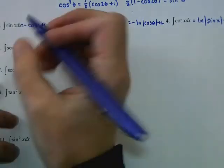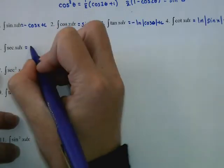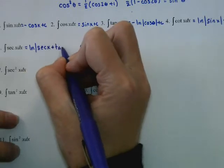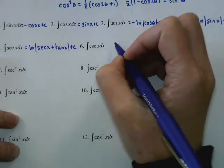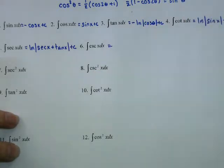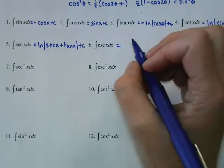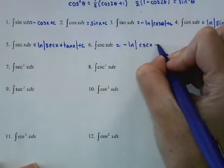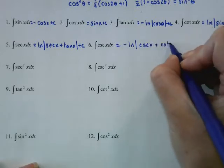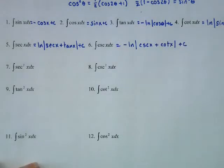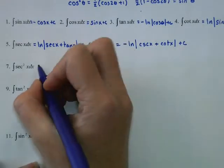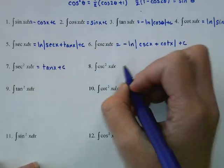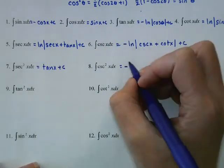The integral of secant is natural log of the absolute value of secant x plus tangent x plus C. The integral of cosecant is negative natural log of cosecant x plus cotangent x plus C. The integral of secant squared is tangent, and the integral of cosecant squared is negative cotangent.